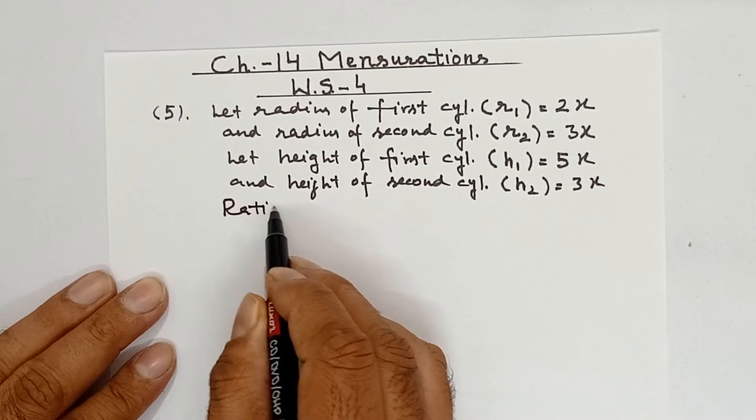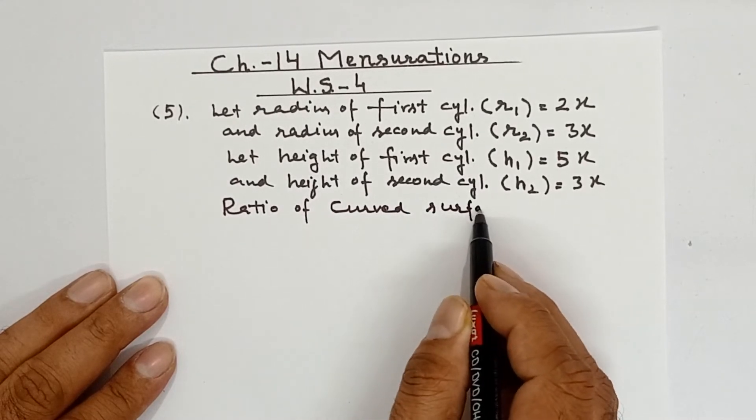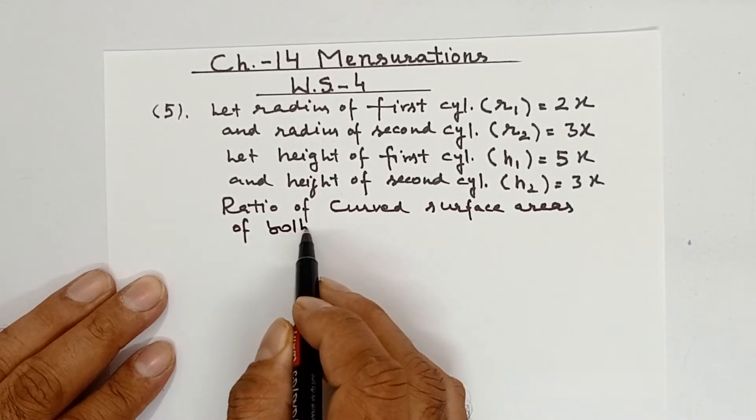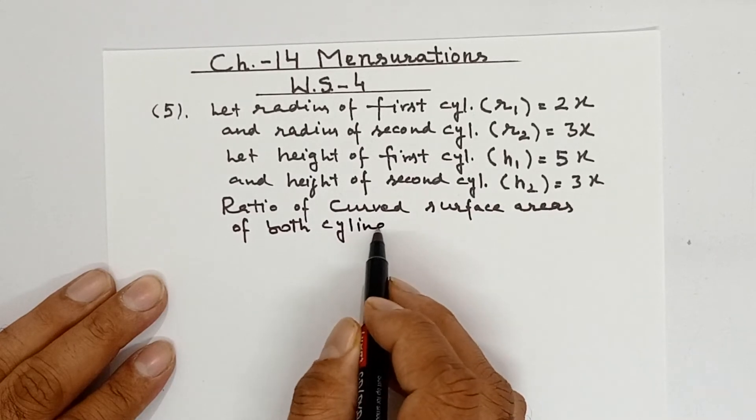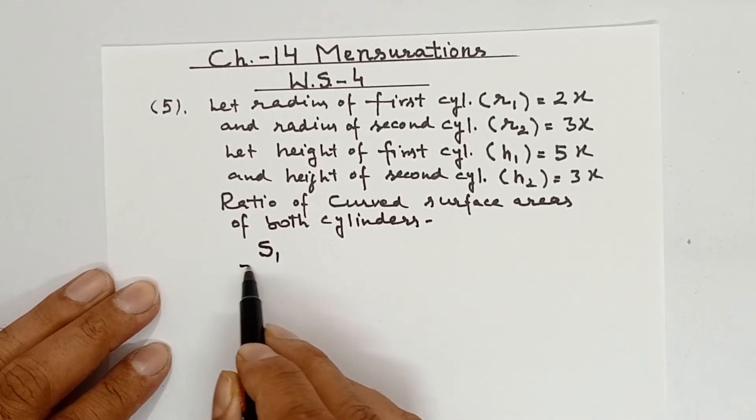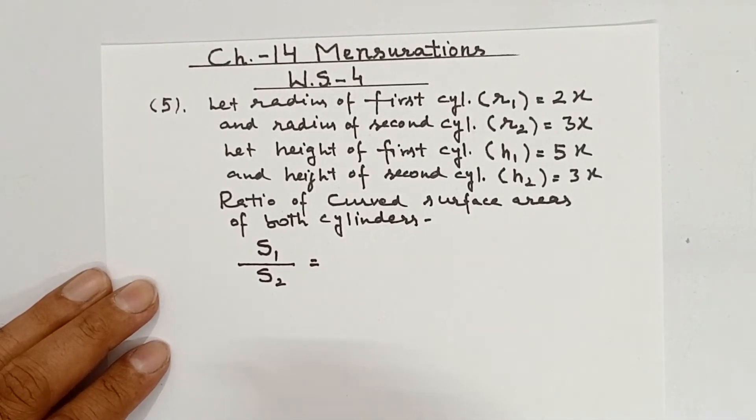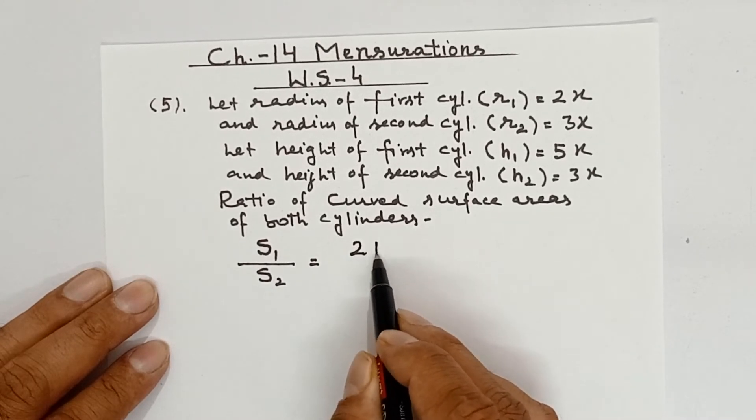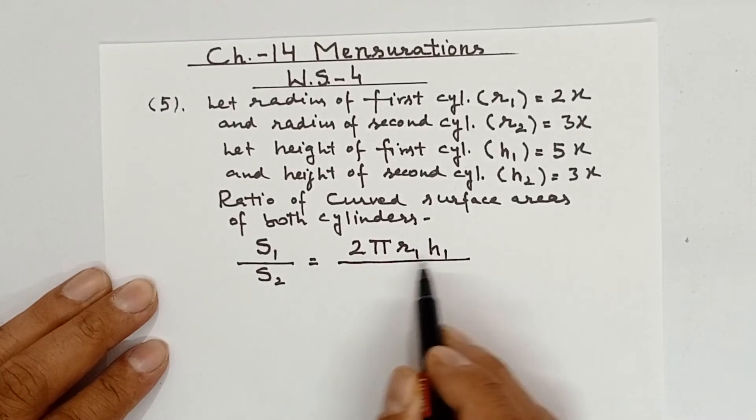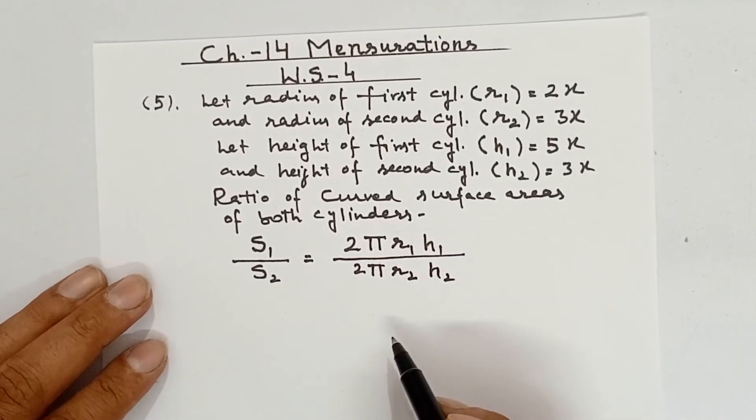I will write ratio of curved surface areas of both cylinders. The first curved surface area is S₁ and of the other is S₂. Now we need to find the ratio of curved surface areas of cylinders, so it is 2πR₁H₁ divided by 2πR₂H₂.